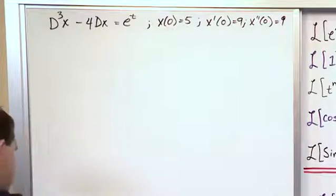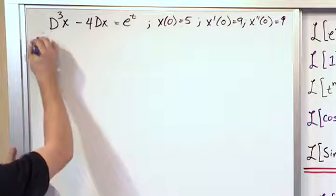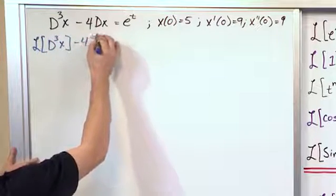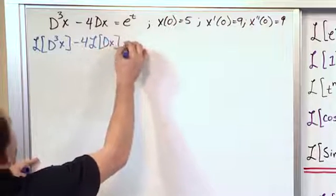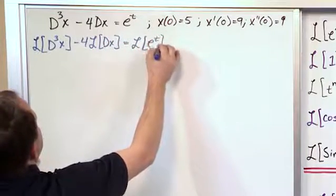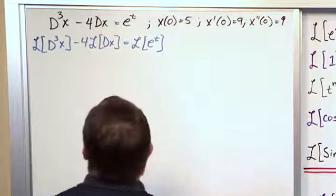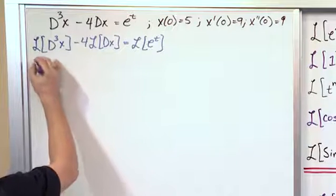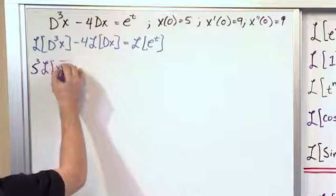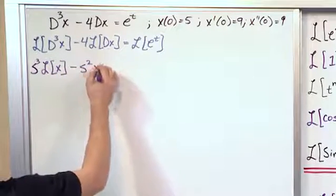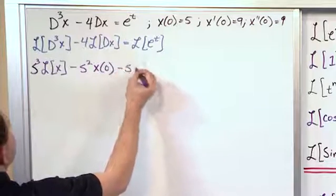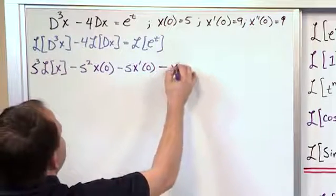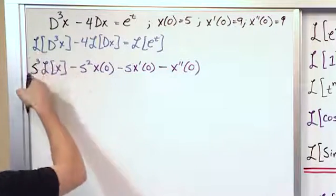We're going to follow exactly the same strategy. We'll take the Laplace Transform of the third derivative here minus 4 times the Laplace Transform of the first derivative, and then we'll have a Laplace Transform on the right-hand side. Here's where we have to make sure we don't make any mistakes. This is the third derivative, so it's s cubed Laplace of x minus s squared x of 0 minus s to the first power x prime of 0, and then we have x double prime of 0.